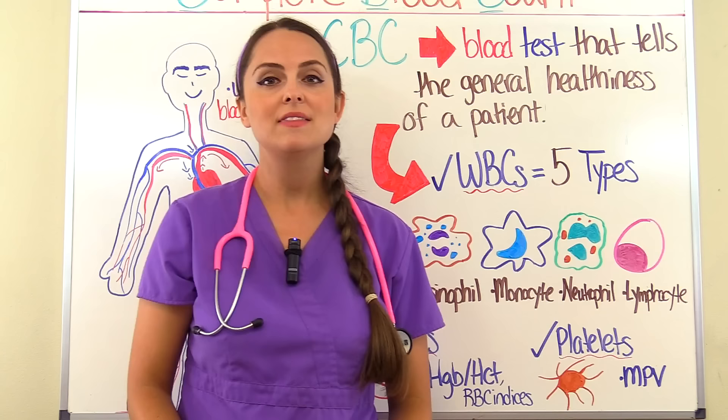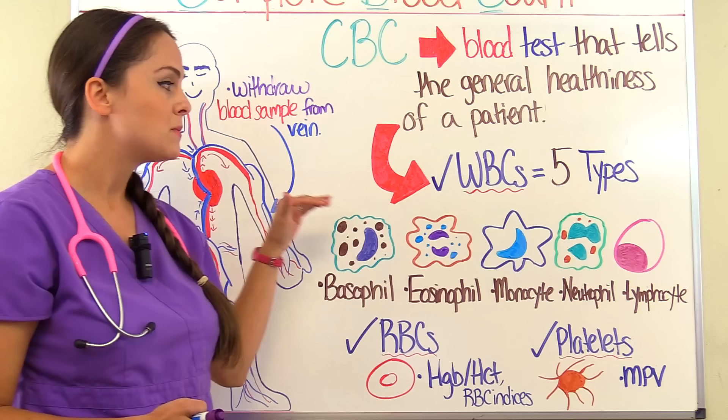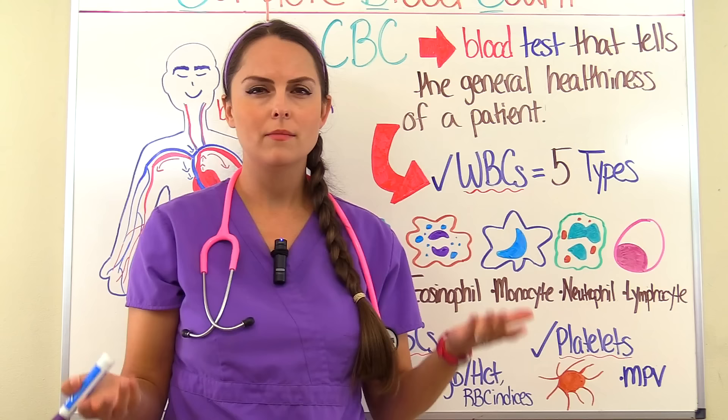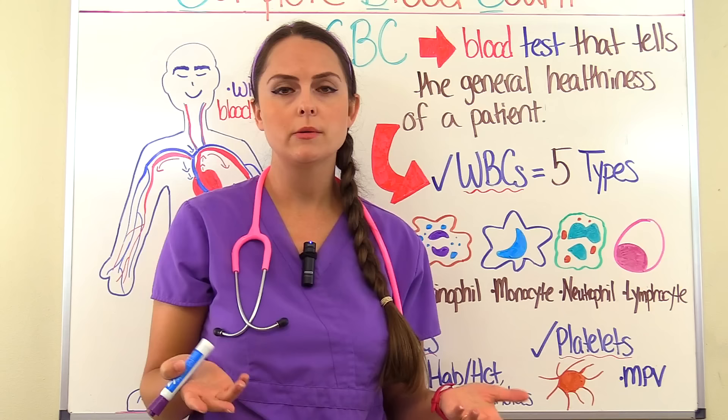The CBC can get a little bit deeper. For instance, if you have a CBC with a differential, it's going to tell you the specific percentage or absolute counts of the five types of white blood cells — like the basophils, monocytes, neutrophils, and lymphocytes. You want to be able to look at that and ask what does a basophil do, or what does a lymphocyte do, because that will give you a clue about what may be going on with your patient.